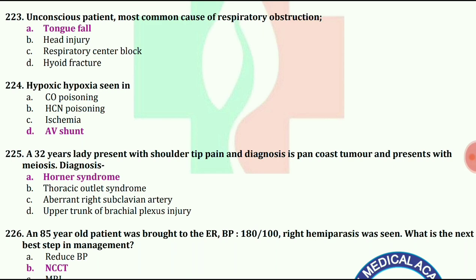A 32-year-old lady presents with shoulder tip pain. Diagnosis is Pancoast tumor and presents with miosis. What will be the diagnosis? The answer is Horner syndrome.